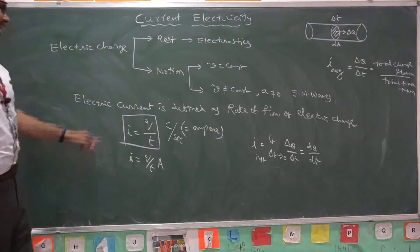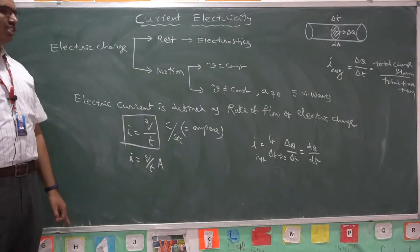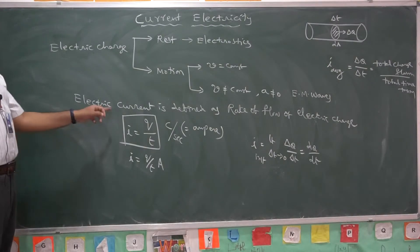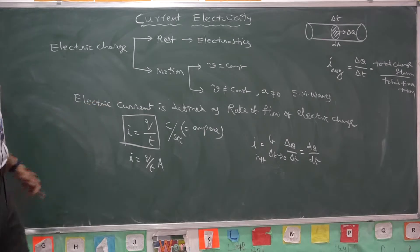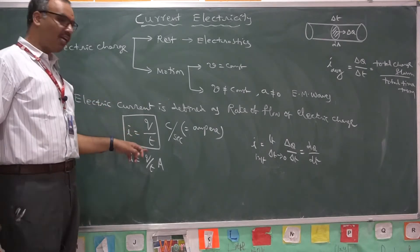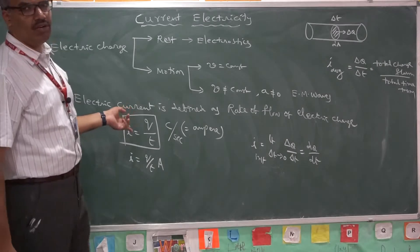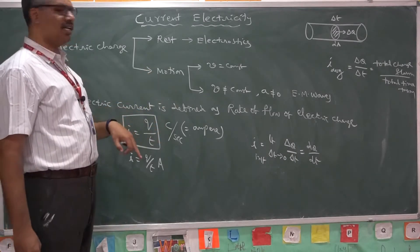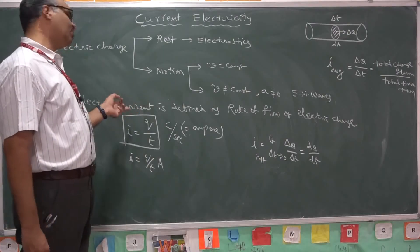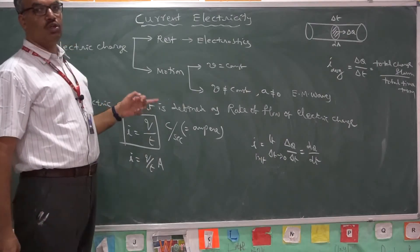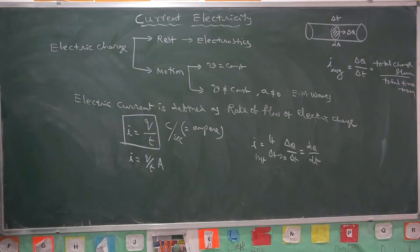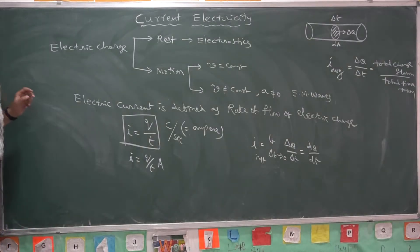As you know that electric current is one of the fundamental physical quantities, we may have a doubt whether it is a scalar or vector. Generally, it is having certain magnitude. Current flows from positive terminal of the battery to negative terminal, so it has direction as well as magnitude. You may think it is a vector, but it is not a vector quantity. Electric current is a scalar quantity.